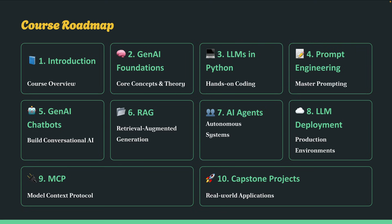The ninth section is about MCP — Model Context Protocol. You will learn the new MCP standard, build an MCP server, and integrate your custom MCP tools with AI agents. The tenth section is all about capstone projects, where we will apply everything we have learned to build real-world, end-to-end AI applications you can showcase in your portfolio, built from scratch and deployed on the cloud.